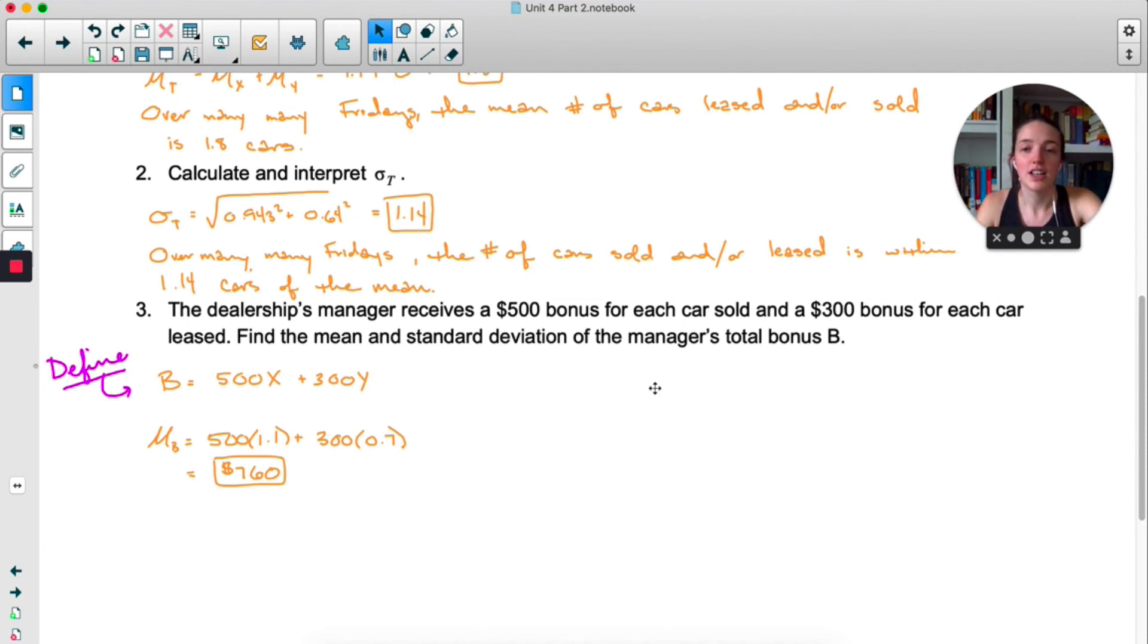Now for standard deviation, let's start with the multiplying bit. The new standard deviation of X is going to be 500 times the old standard deviation. So I'm doing 500 times 0.943. We can do a similar thing for the new standard deviation of Y, so 300 times 0.64. Those are the new standard deviations for those new variables.